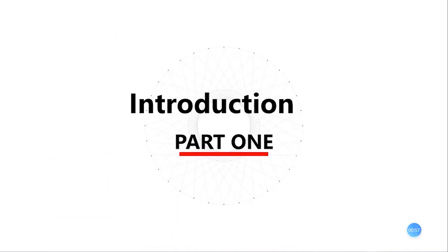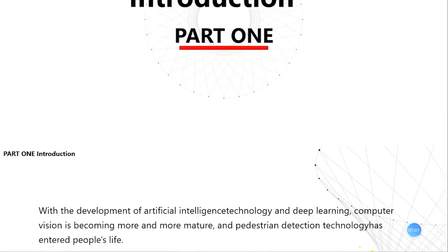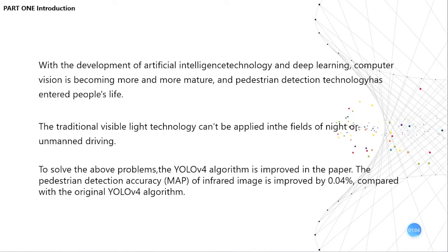Now I will talk about the first part: Introduction. With the development of artificial intelligence technology and deep learning, computer vision is becoming more and more mature and pedestrian detection technology has entered people's lives. The traditional visible light technology cannot be applied in the fields of night or unmanned driving. To solve the above problems, the YOLO V4 algorithm is improved in this paper. The pedestrian detection accuracy of infrared image is improved by 0.04% compared with the original YOLO V4 algorithm.